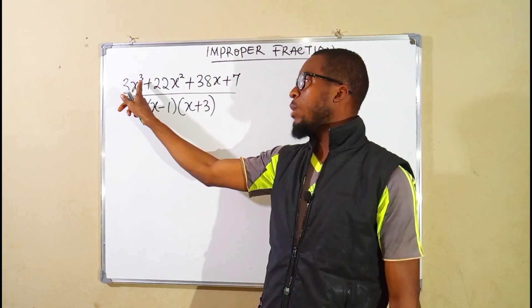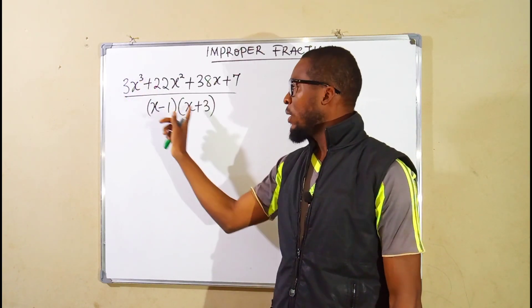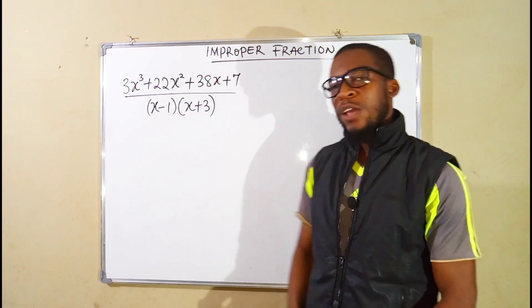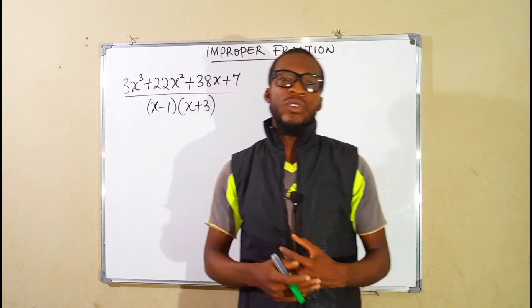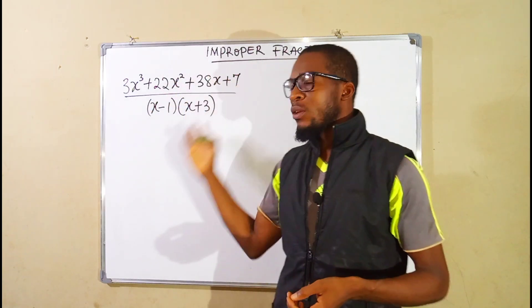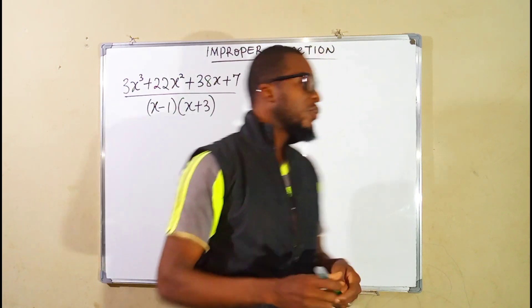You can see the highest power here is 3 and the highest power here is 2 if you expand these two factors. So I told you first thing you need to do is to carry out long division. You divide the numerator by the denominator. So let's do that.